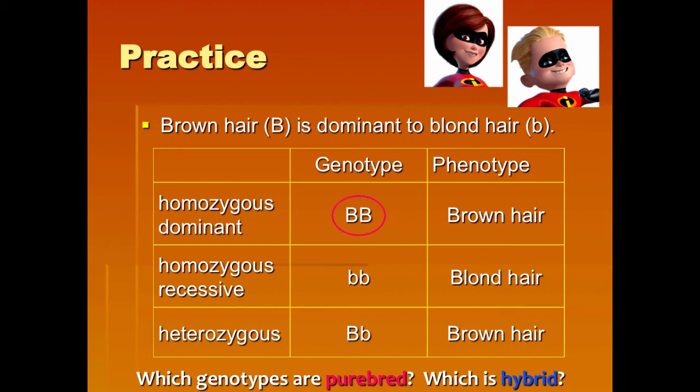Which genotypes are purebred, which is what we call homozygous? That would be big B, big B and little b, little b. What do we call a hybrid? That is heterozygous, and that would be big B, little b.